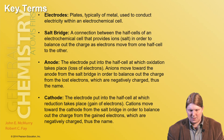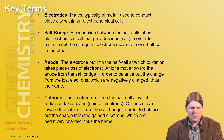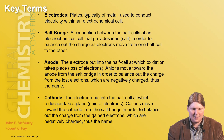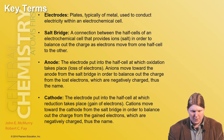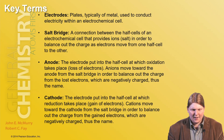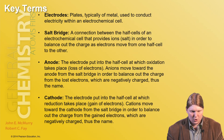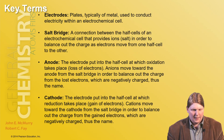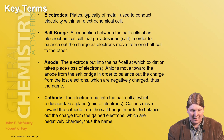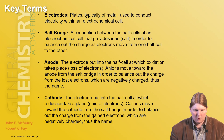The anode is the side where oxidation takes place — an ox, red cat. Reduction takes place at the cathode where electrons are gained. Anions move toward the anode from the salt bridge in order to balance out the charge from lost electrons, which are negatively charged. Cations move toward the cathode from the salt bridge to balance out charge gained from gained electrons.